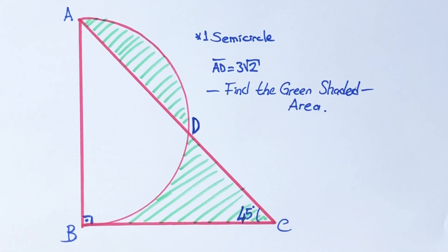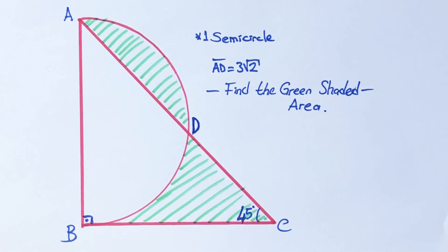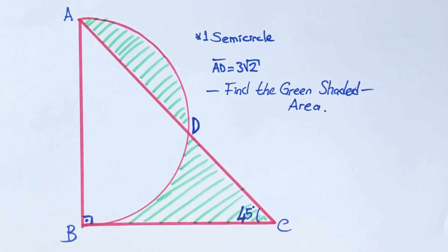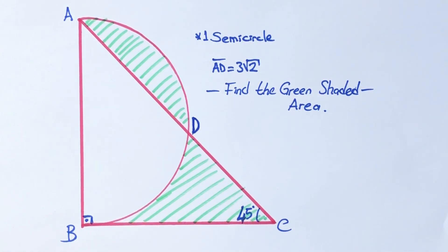Hello everyone, in this video we have one semicircle and one isosceles right triangle, and the area of the green shaded region is asked.